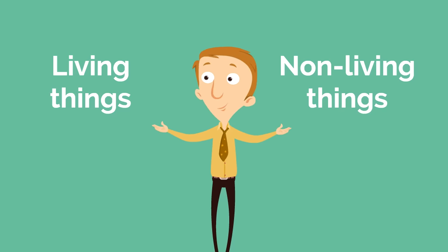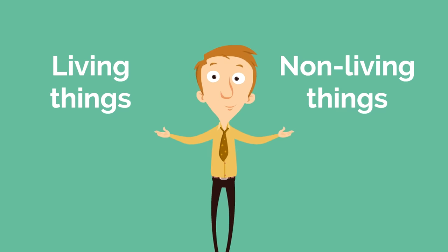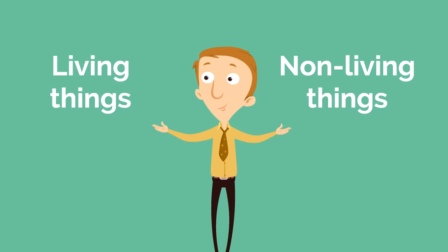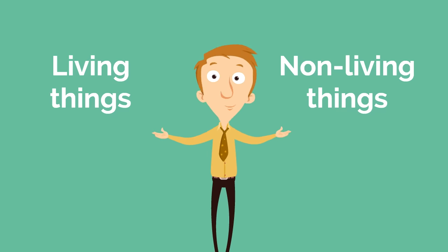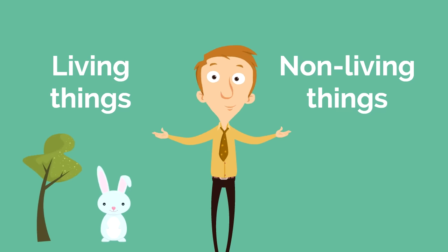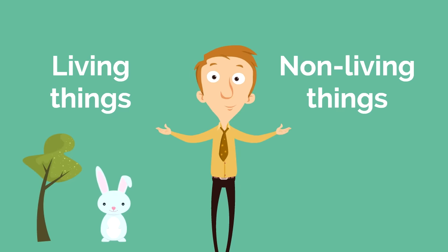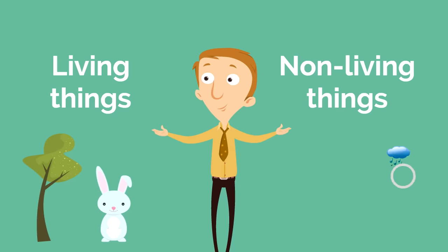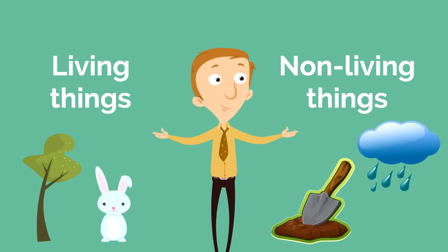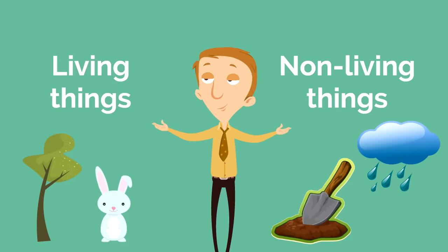You might be wondering, what are some examples of living and non-living things that interact in an ecosystem? Well, living things like animals and plants interact with the non-living things outside, like the weather and soil. Together, they make up a very special place called an ecosystem.